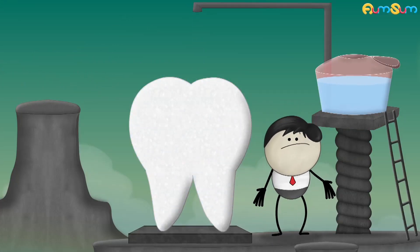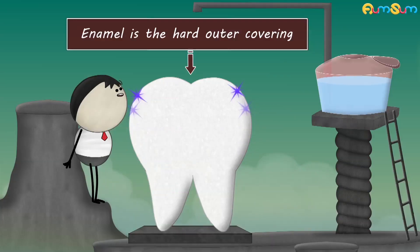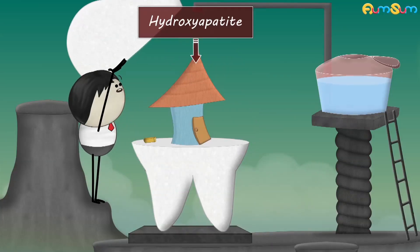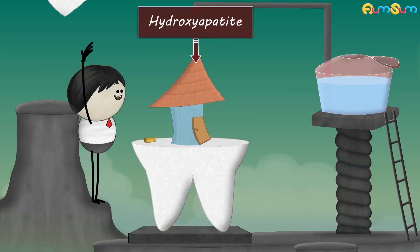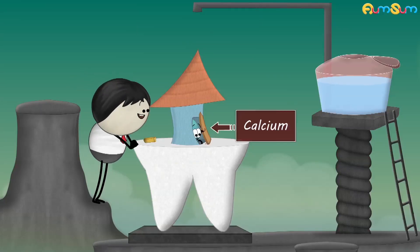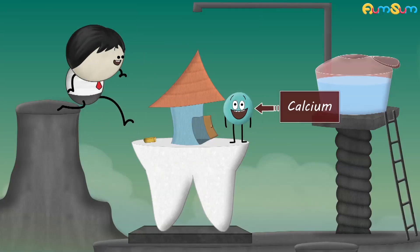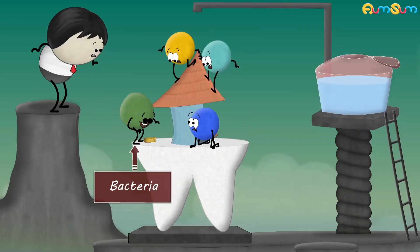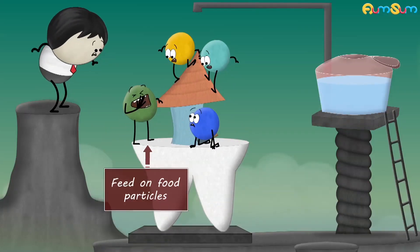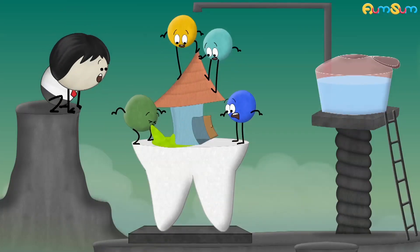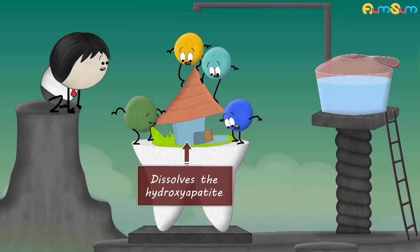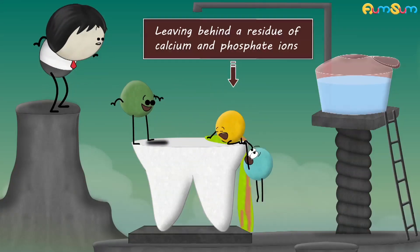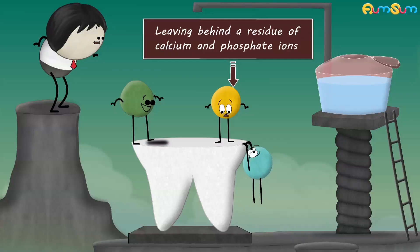But how? Enamel is the hard outer covering of our tooth. It is primarily made up of hydroxyapatite, which is a compound of calcium, phosphorus and hydroxide. Now, when bacteria in our mouth feed on food particles, they produce acid. This acid dissolves the hydroxyapatite, leaving behind a residue of calcium and phosphate ions.